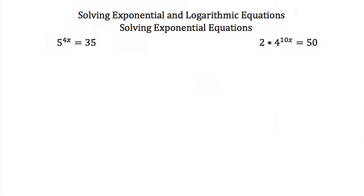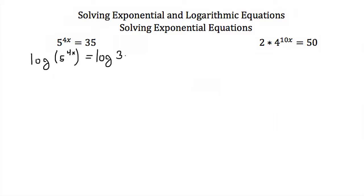If we wanted to solve this, the easiest way to get x out of the exponent is to do the opposite of an exponential. We're going to take the log of both sides of this equation. It doesn't matter what your base is for the log, so I'm going to use the common log, or base 10. This gives us the log of 5 to the 4x power equal to the log of 35.